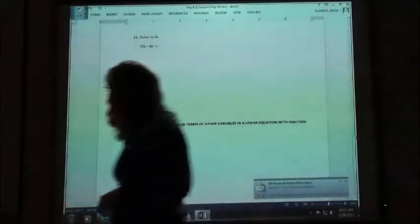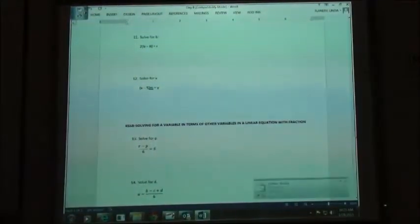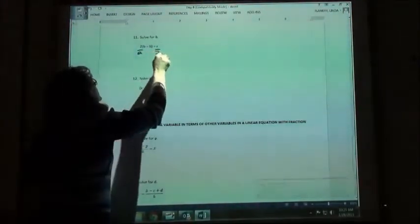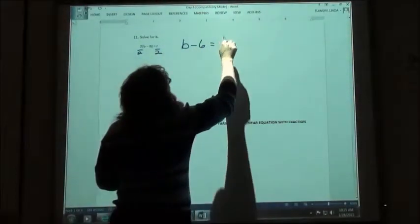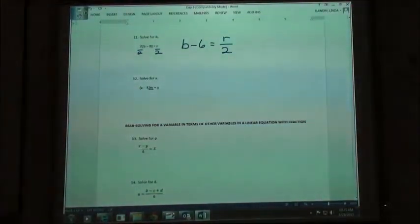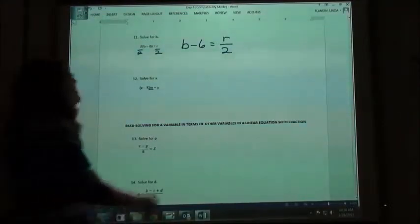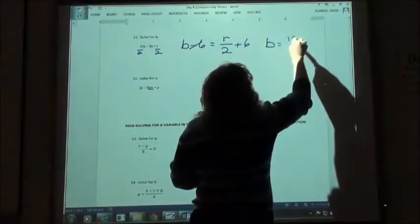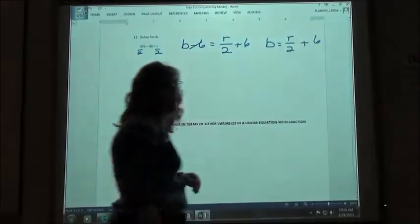So number 11, what would you like to do first to solve that one? Divide by the 2, okay. She says I'm going to get rid of that first. So b minus 6 is going to equal r over 2. If I'm going to solve that for b, then all I have to do is add the 6 to move the 6 to the other side. b would equal r over 2 plus 6n.